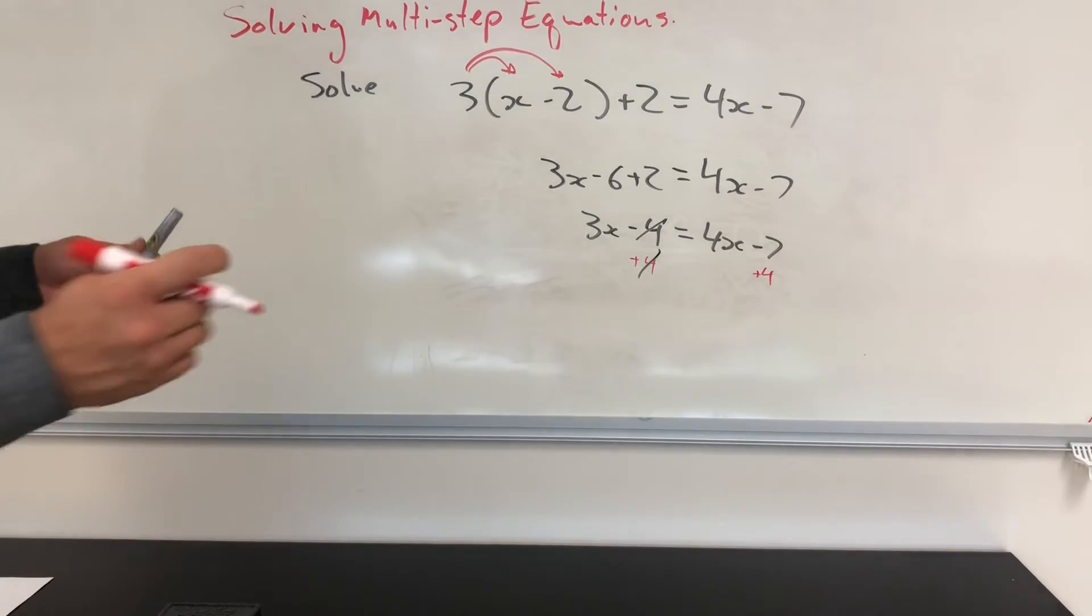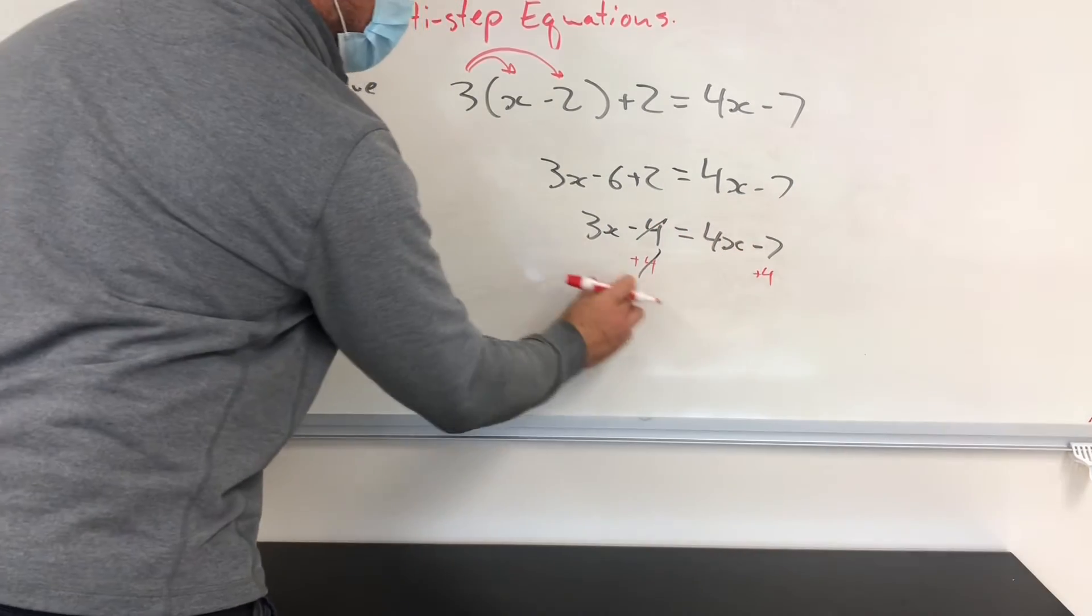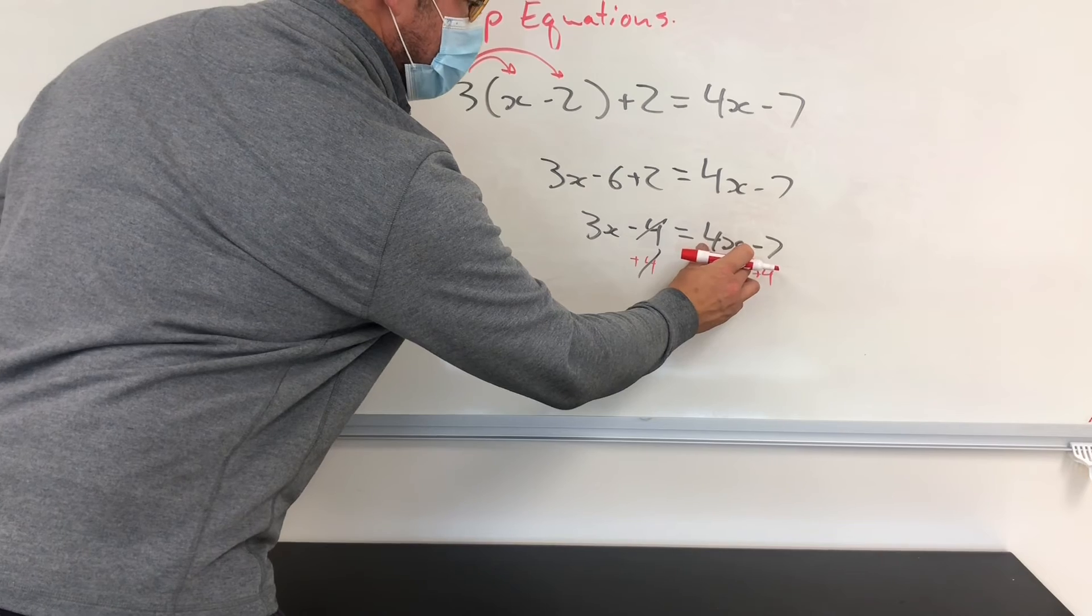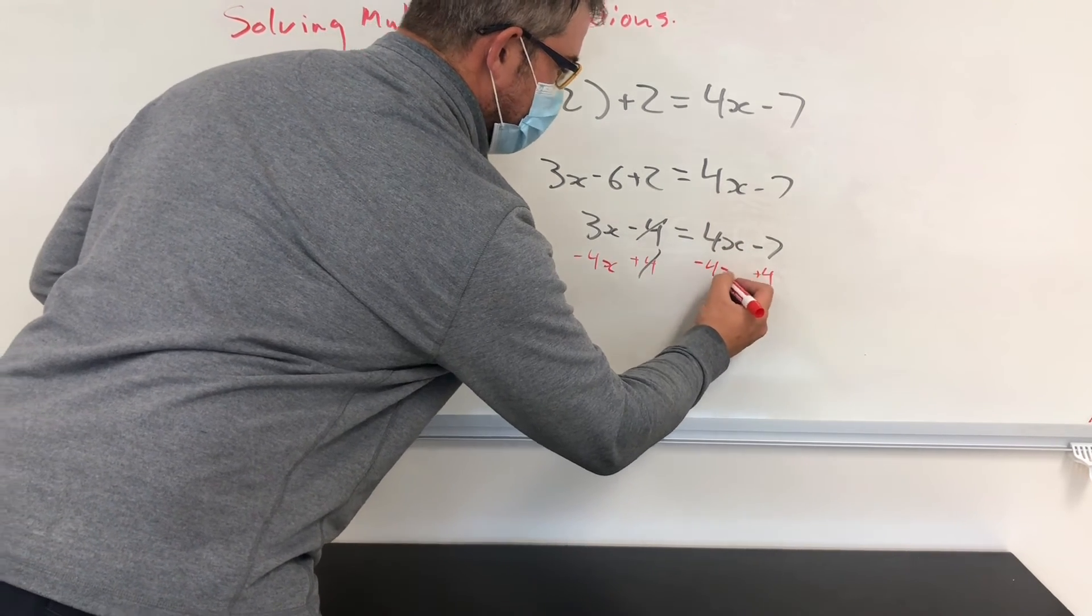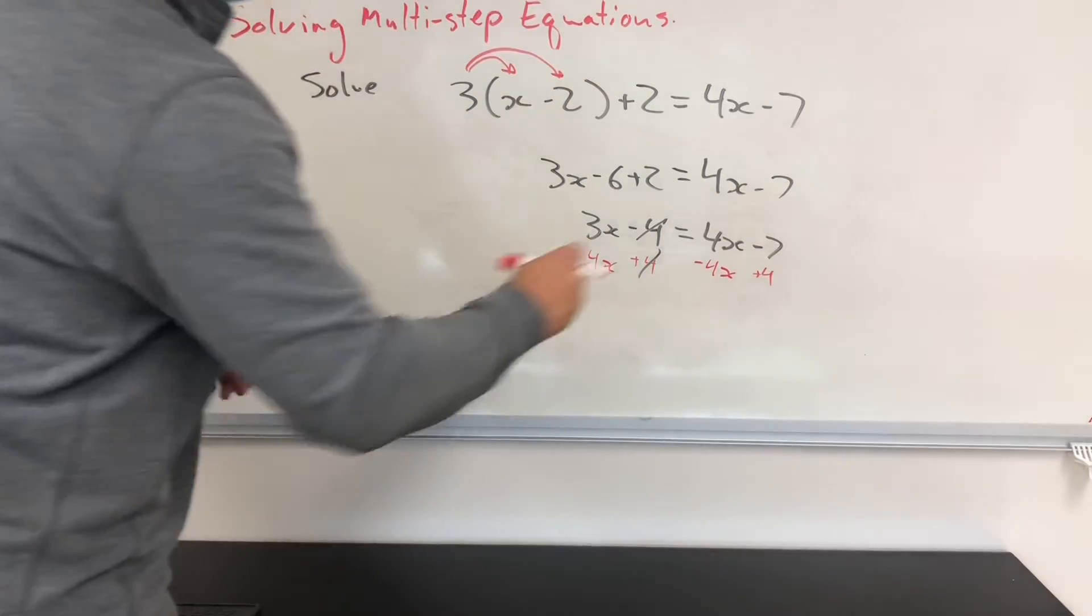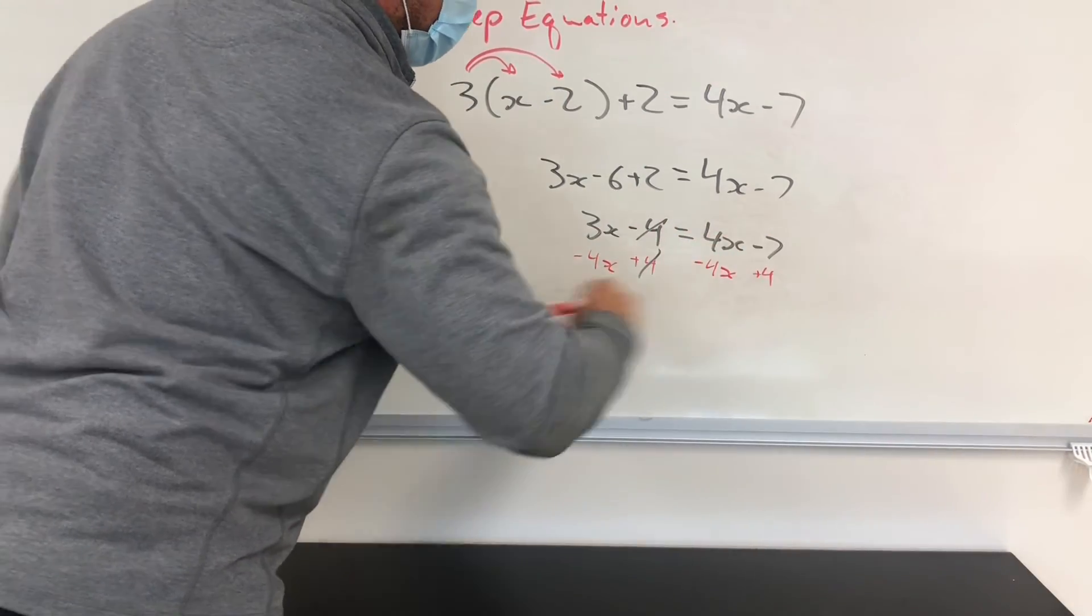Now I can do this at the same time. I want to bring this 4x over to here. Well, it's positive on this side, so it'll become negative right here. And what I do to one side, I must do to the other. So here, positive 4x and negative 4x also cancel.